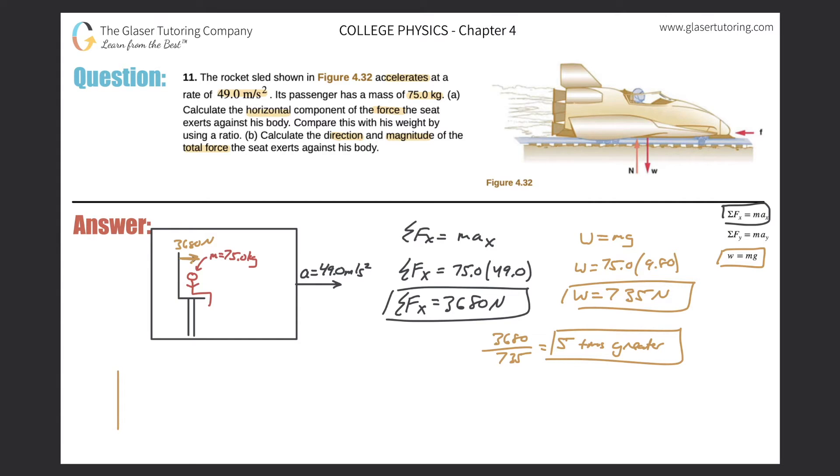So in terms of a free body diagram, let me do it in black, we would have two forces here. We would have the horizontal force that the seat exerts on the person. That is the 3680 newton force. And then there's another force that the seat exerts on the person, and it's upward. It's directly upward. Let me make that a little straighter.